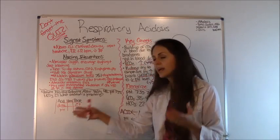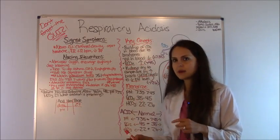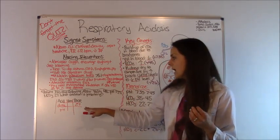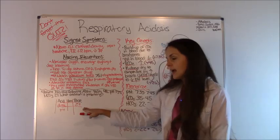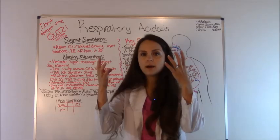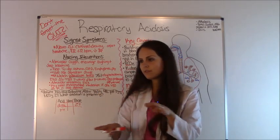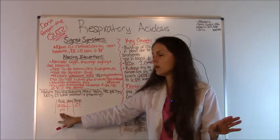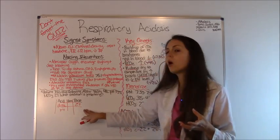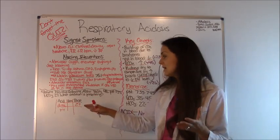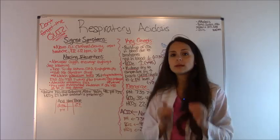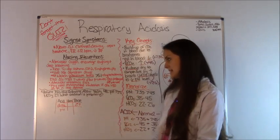We know we have respiratory acidosis, and it's compensated, but is it fully or partially compensated? It's 27. What's the purpose of bicarb trying to increase? The purpose is because it wants to bring that pH back to a normal level. Right now, our pH is not normal. It is still acidic. So it's just partially compensated. If it were fully compensated, the pH would be back to normal. So this is respiratory acidosis partially compensated.